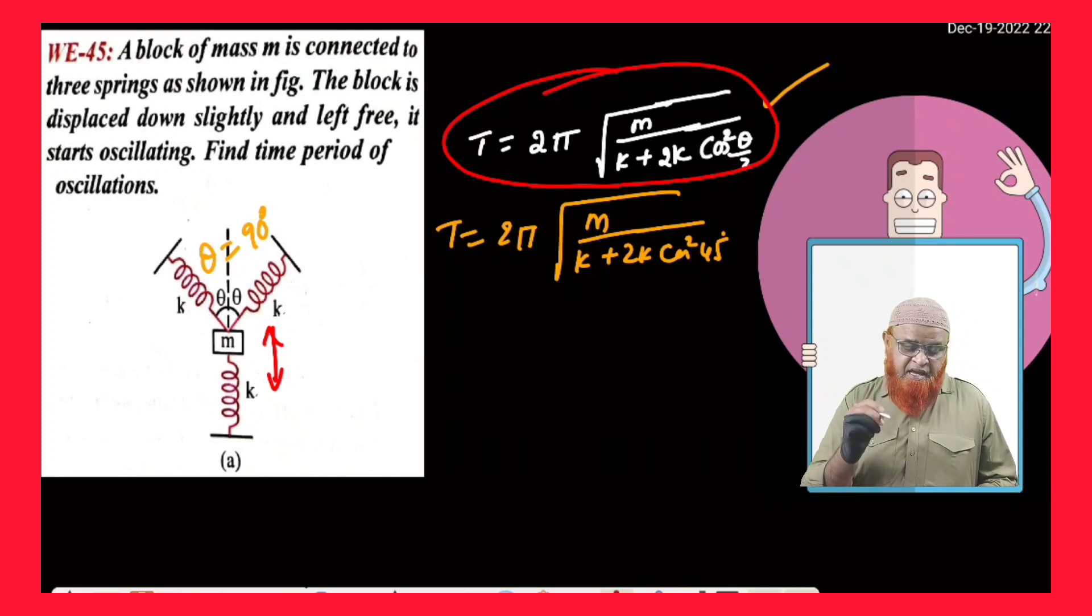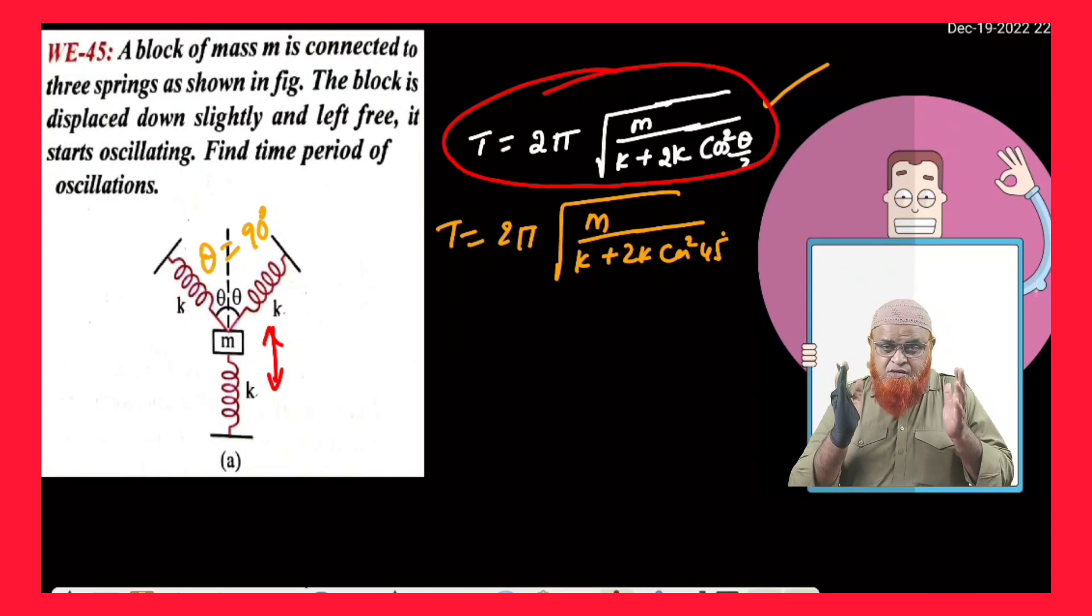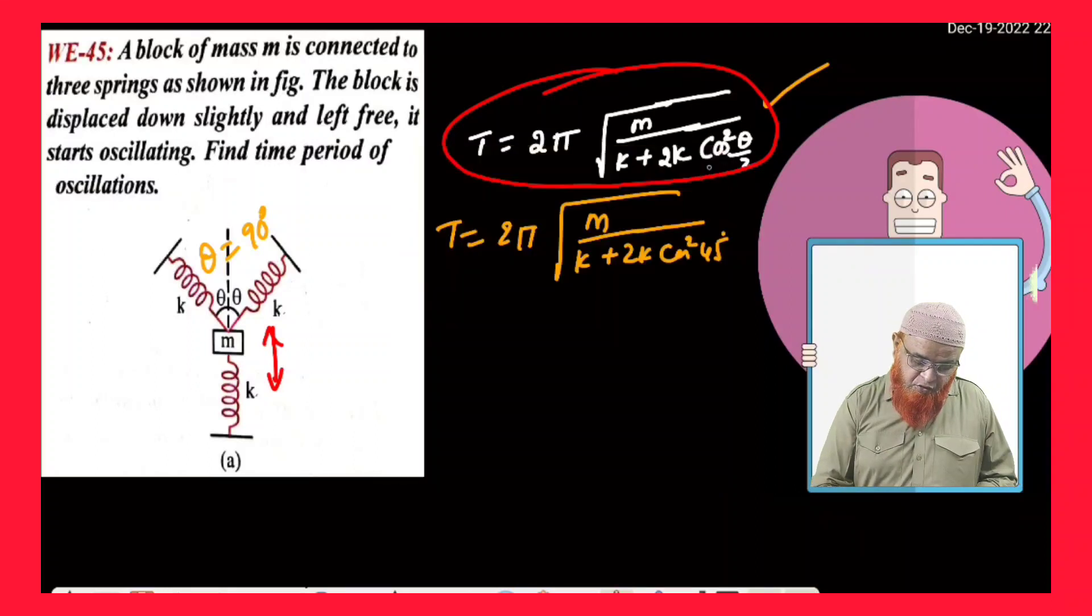T equals 2π into square root of M by k plus 2k cos square theta by 2. So, this is cos square theta by 2 here.